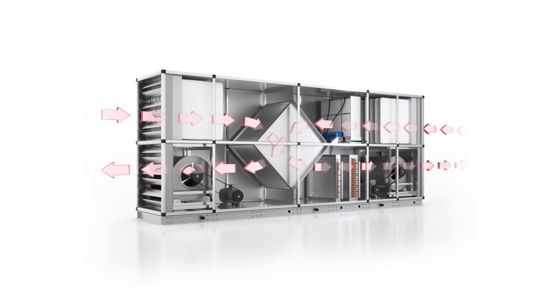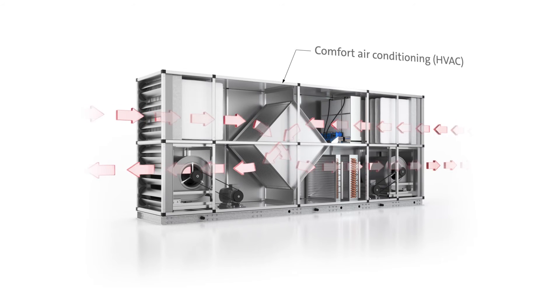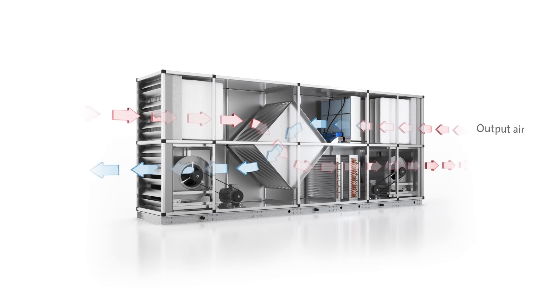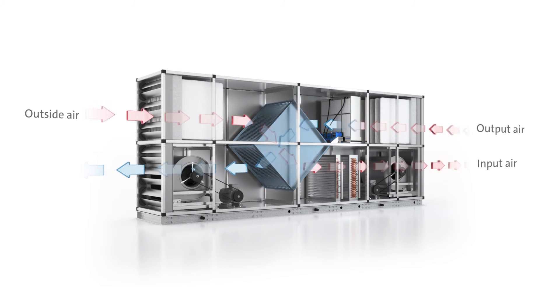In HVAC systems, adiabatic cooling can be used as a cost-effective alternative to conventional mechanical cooling. The exhaust airflow from a room can be cooled by means of an evaporative cooler. A cross-flow heat exchanger is used to cool the air sucked in from outside.